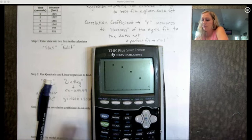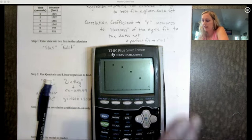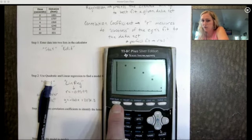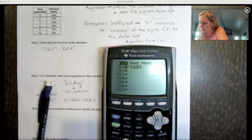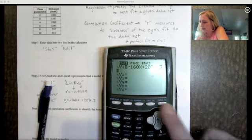Now I'm going to hit graph. There are those points graphed. Now I want to see how close did that line actually fit the graph. I'm going to go back to y equals and I'm going to type that in: negative 160x plus 2034.3. I'm going to hit graph again.